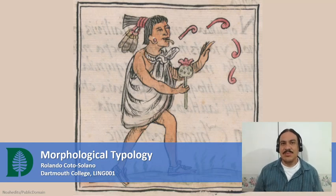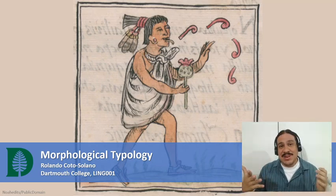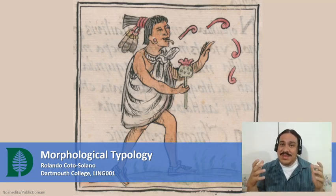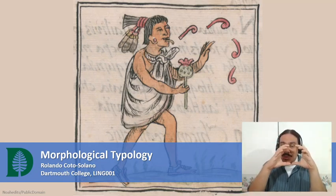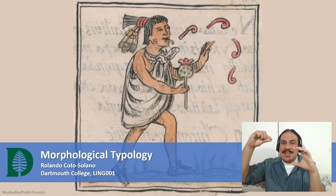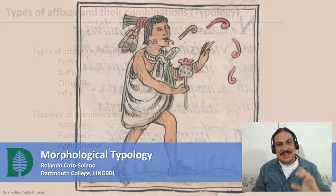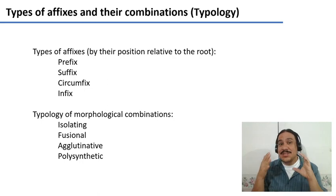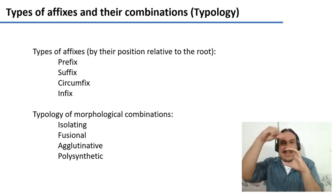In the last video, we started our study of morphology and we looked at morphemes. A morpheme is a minimal unit of meaning, and there are many ways to describe morphemes. One of them is describing them as either roots or affixes. A root is the core meaning of the word, and the affix adds a certain grammatical dimension or maybe changes the meaning a little bit. In this video, we're going to take a detailed look at affixes and what the relationship is between affixes and roots.